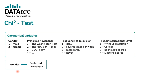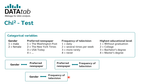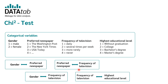Therefore, if you want to investigate if there is a relationship between gender and preferred newspaper, you need the chi-square test. Or if you want to investigate gender and frequency of television, or preferred newspaper and frequency of television, or frequency of television and the highest educational level — always if you have two categorical variables, you need the chi-square test to investigate if there is a relationship between these two variables.